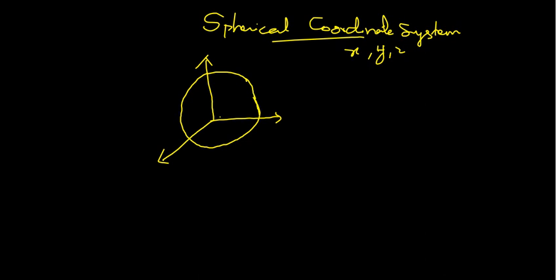Consider a point on the surface of the sphere. The radius of the sphere is the first coordinate in the spherical coordinate system. Here we have X, Y, and Z. I consider a point, and from the origin to this point there is R. Now draw a perpendicular from this point to the XY plane, join the origin and this point. R and Z make an angle theta.